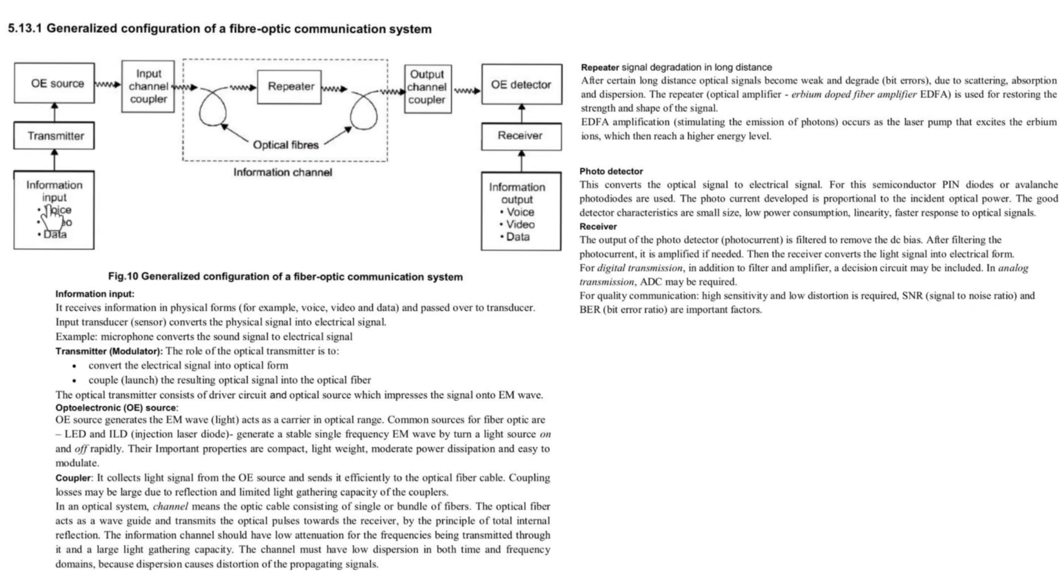The fiber optic communication system consists of information, transmitter, OE source which is optoelectronic source, input channel coupler, optical fiber, repeater, output channel coupler, OE detector, receiver and information.